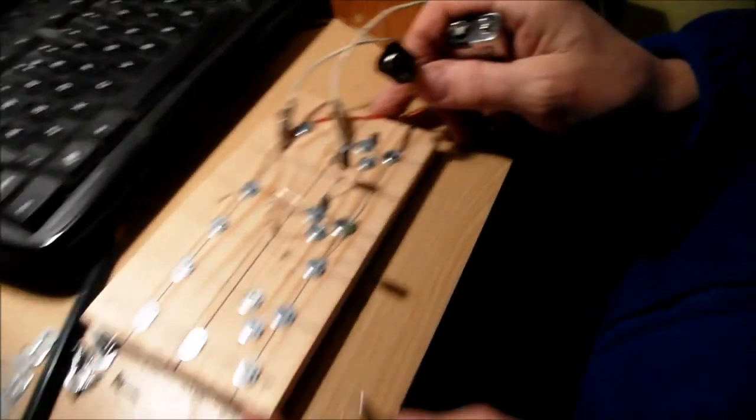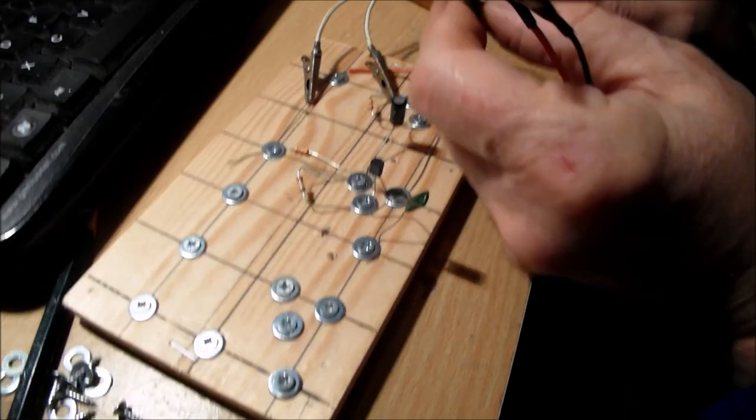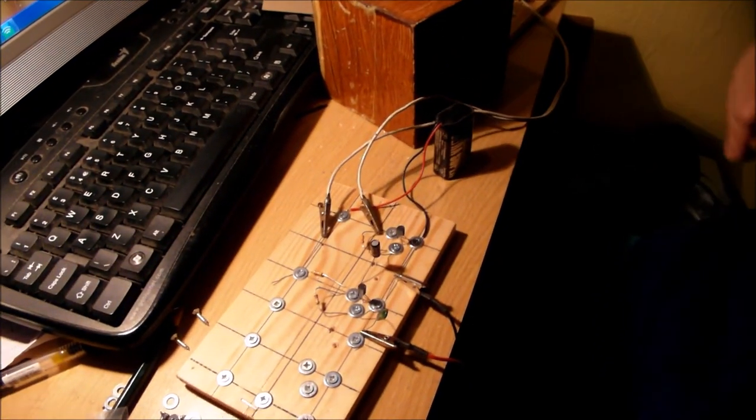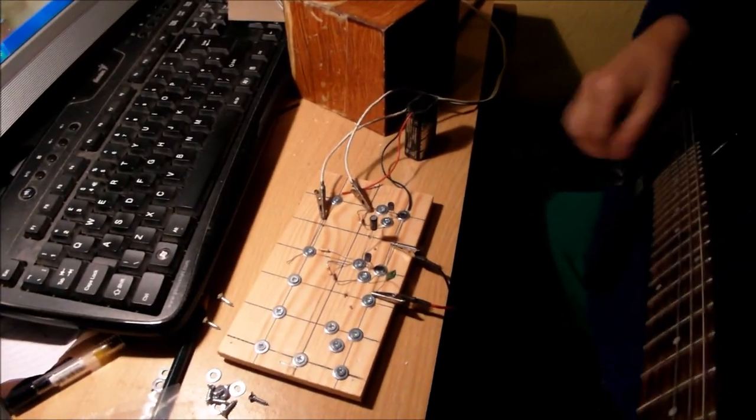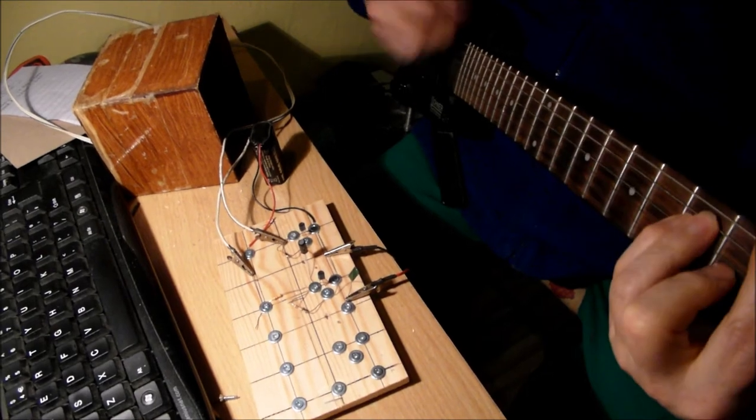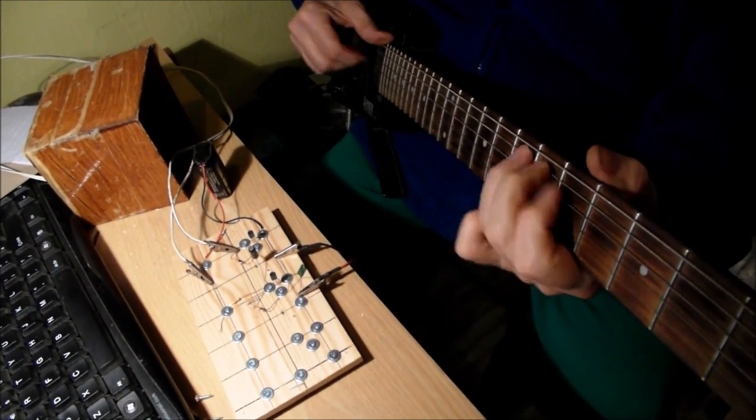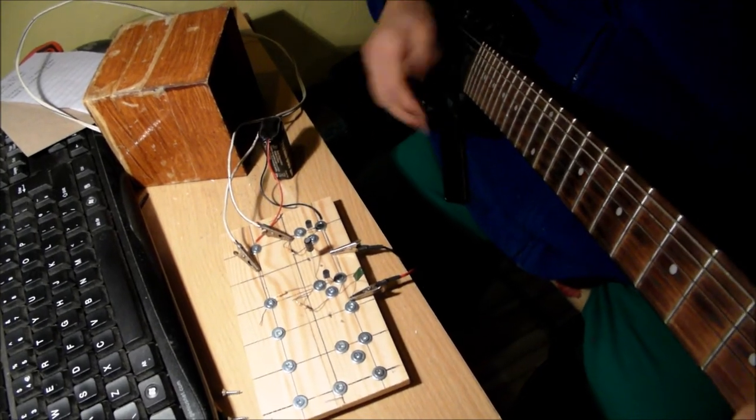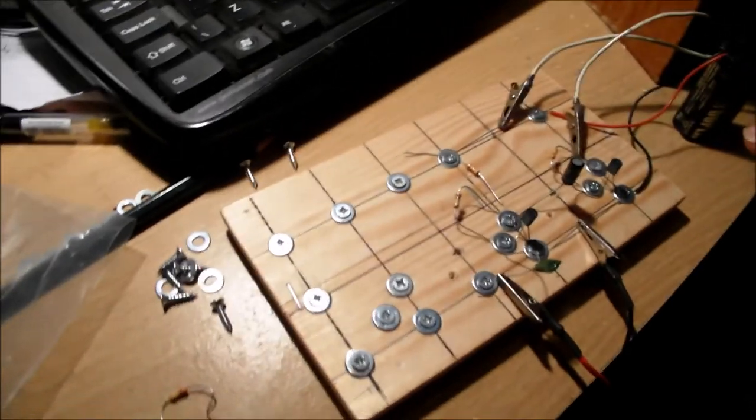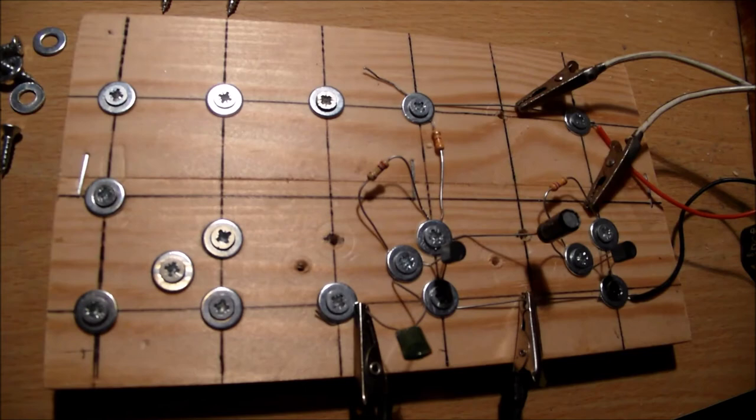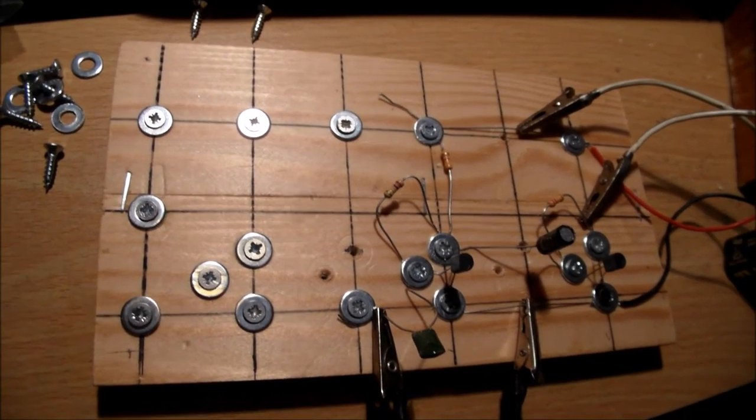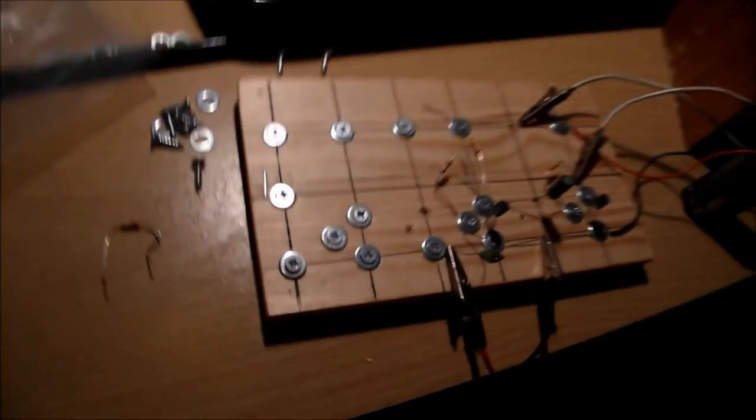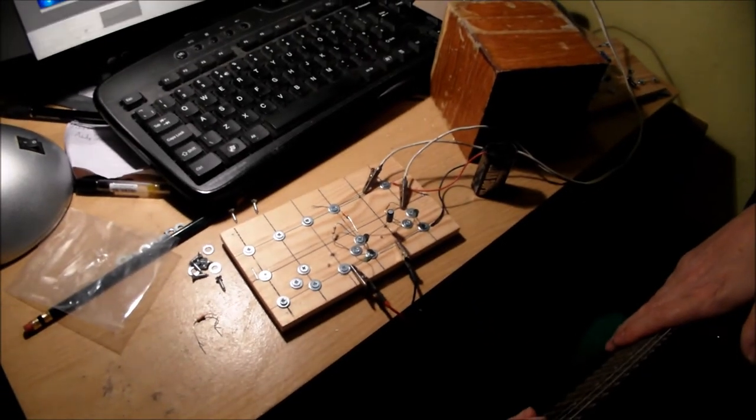This is the two-transistor guitar practice amplifier near completion. All we've got to do is first of all connect the guitar up. There we are. This is going to be a fairly clean sort of sound. That's the two-transistor non-soldering, no soldering guitar practice amplifier. And in the next submission, what we'll do is we'll add another transistor to increase the volume. Thank you all you people on YouTube for taking notice of what we do here. Bye and thanks for watching.